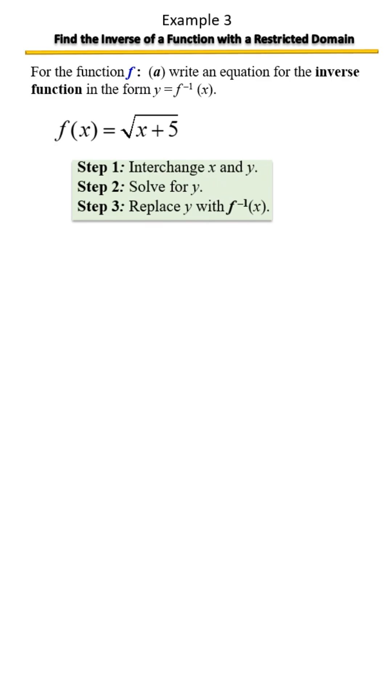Let's start with step 1 to swap x and y. We know that f(x) is the same thing as y, so we're going to remove this and replace it with an x. We're going to remove the x and replace it with a y. When we do so, it's going to look like so.